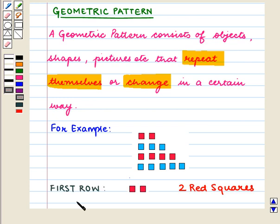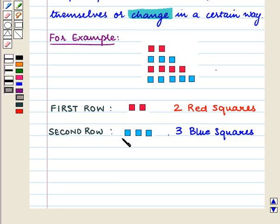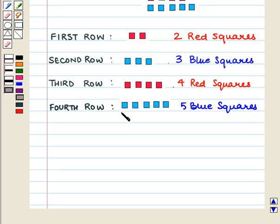We see that the first row has 2 red squares, the second row has 3 blue squares, the third row has 4 red squares, and the fourth row has 5 blue squares.